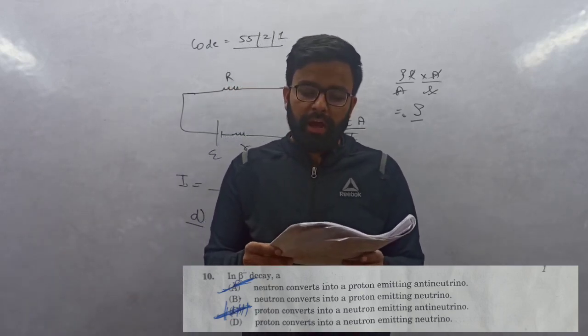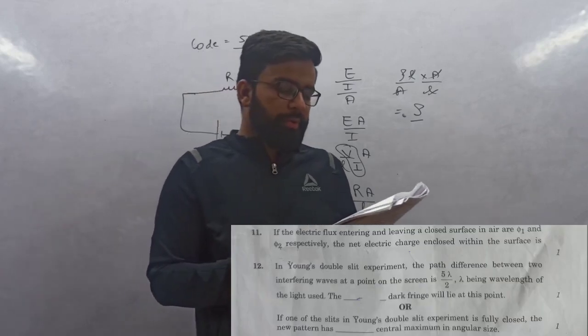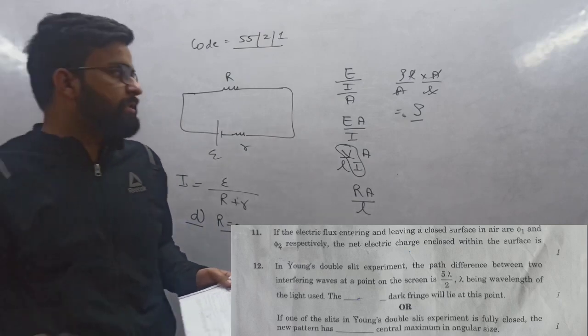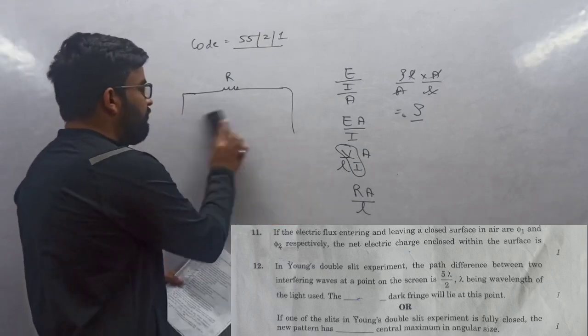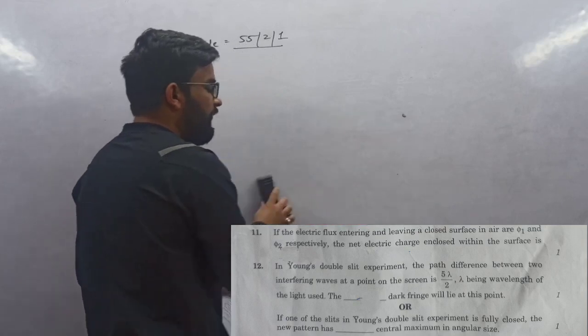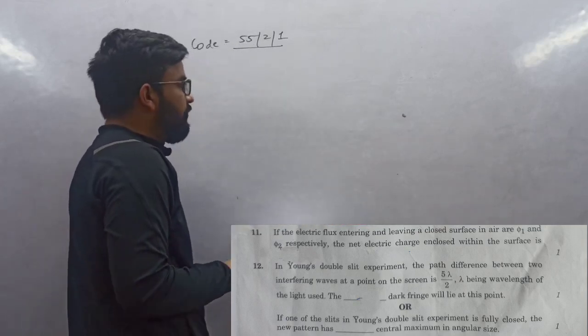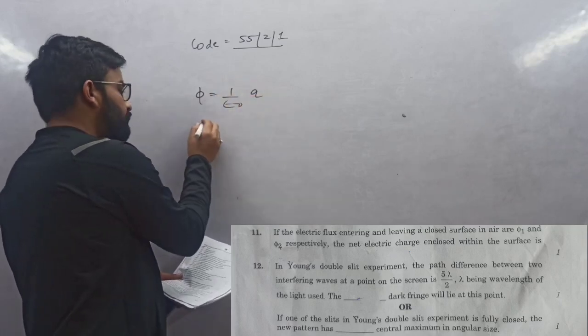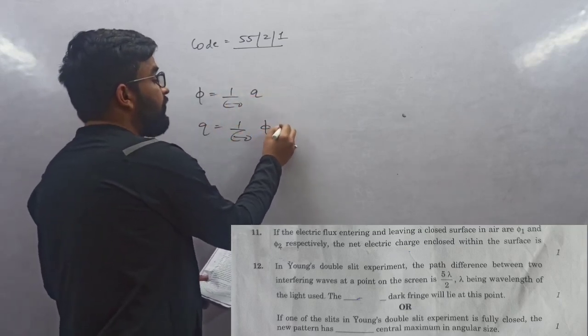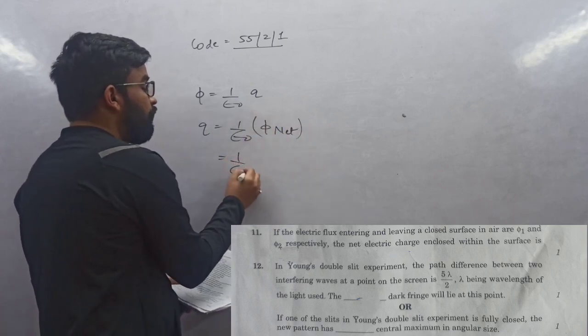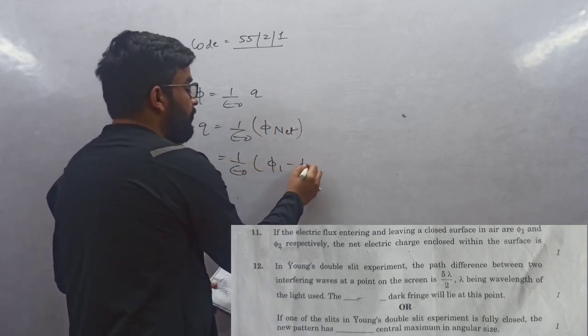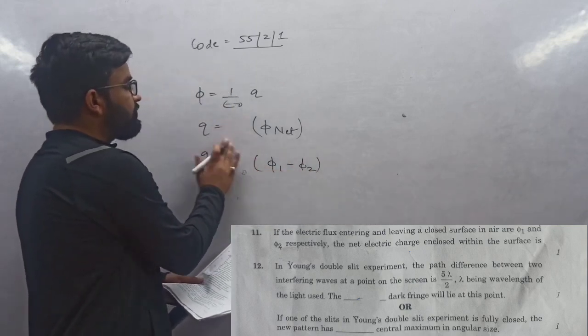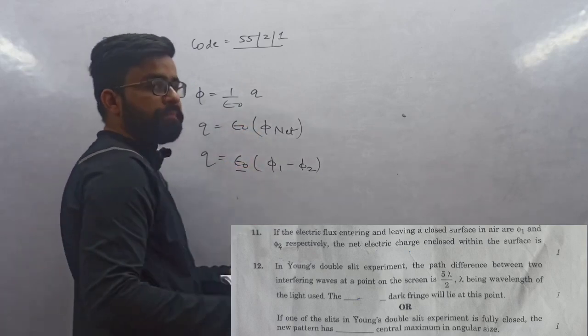Question 11: Net flux equals 1/ε₀ times q. So charge will be 1/ε₀ into net flux. Net flux is q1 minus q2 because one is entering and one is leaving. Total charge will be ε₀ times (φ1 - φ2).